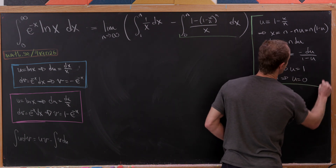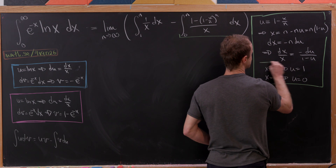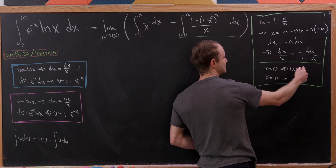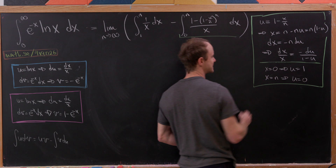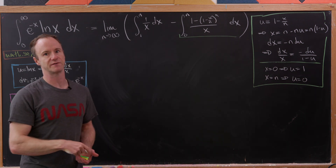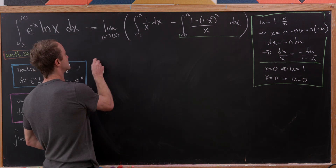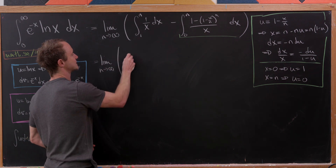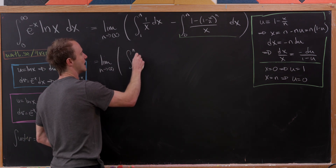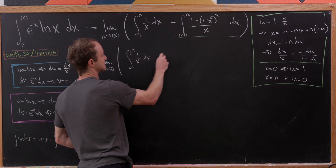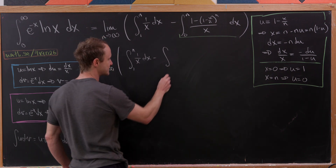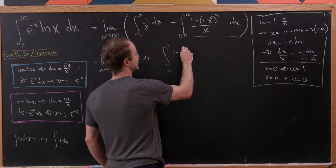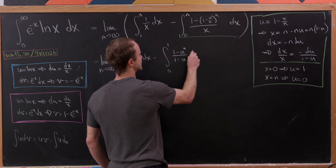Those are the full rules for our substitution. We take the minus sign and use it to flip the limits, going from zero to one instead of one to zero. So that leaves us with the limit as n goes to infinity of the integral from one to n of one over x dx, minus the integral from zero to one of (1 minus u) to the n over (1 minus u), du.